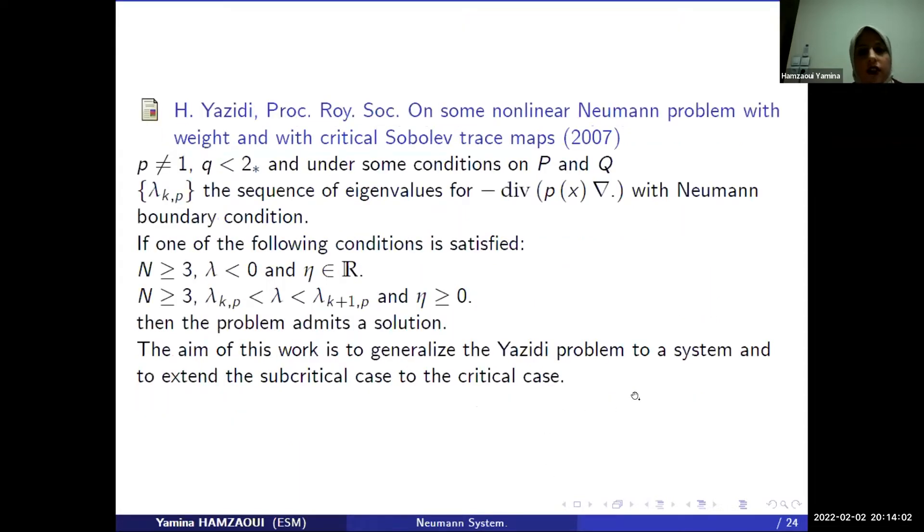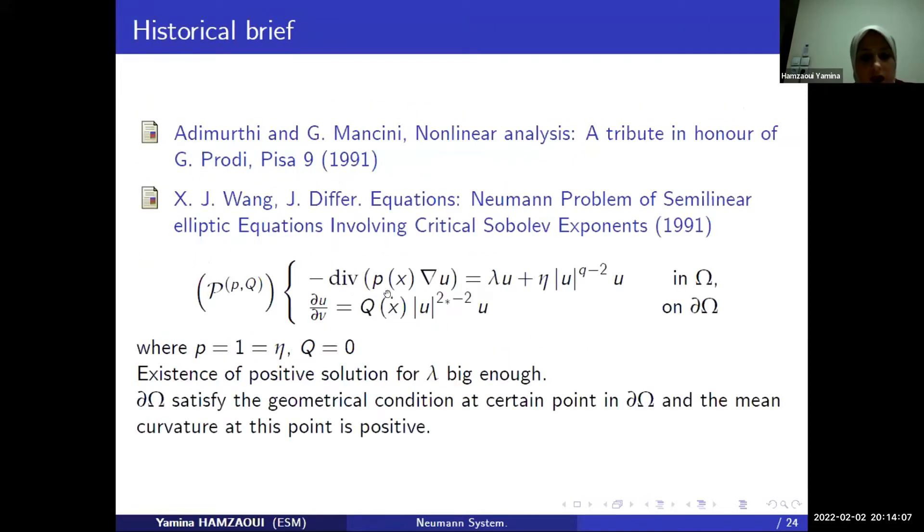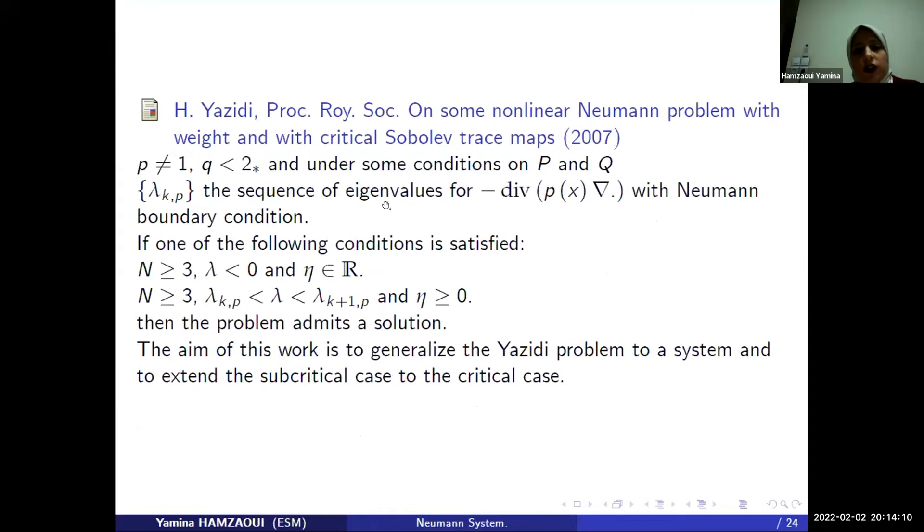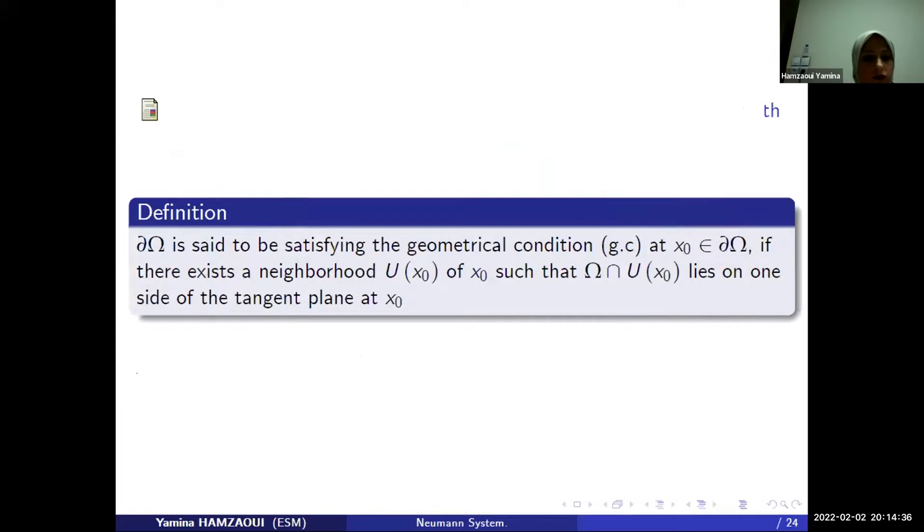Next, El Hamidi and Rakotoson in 2007 have treated the same problem, but when the weight P is not a constant. Under some condition on P and Q, and lambda k_p, the sequence of eigenvalue for the operator with the Neumann boundary condition, and if one of the following conditions is satisfied, then the problem admits a solution. The aim of this work is to generalize the El Hamidi and Rakotoson problem to a system and to extend the subcritical case to the critical case.